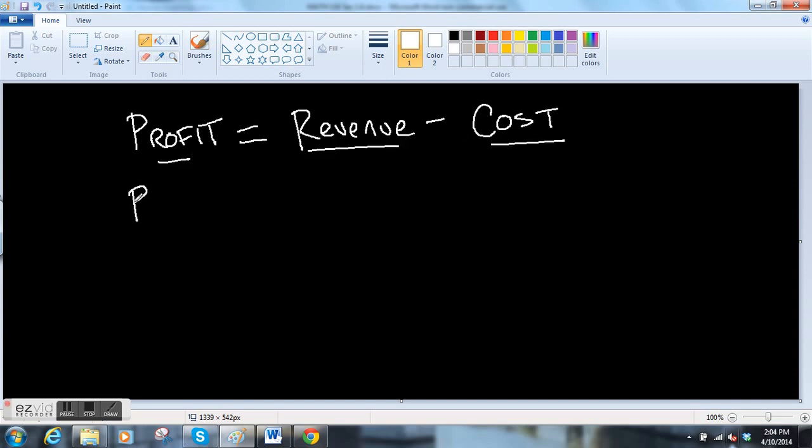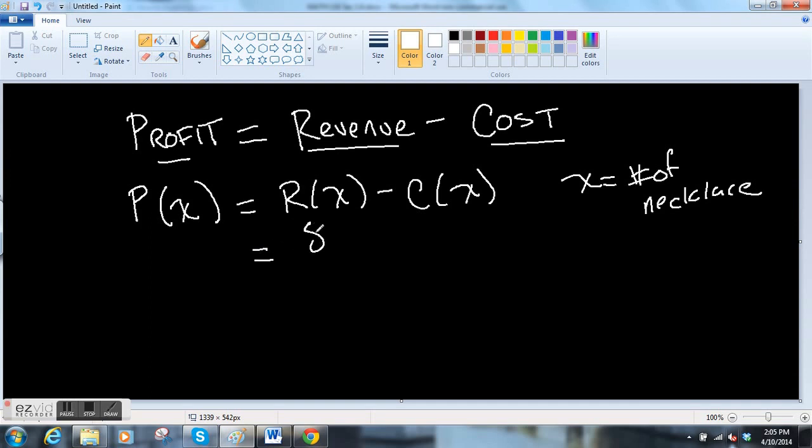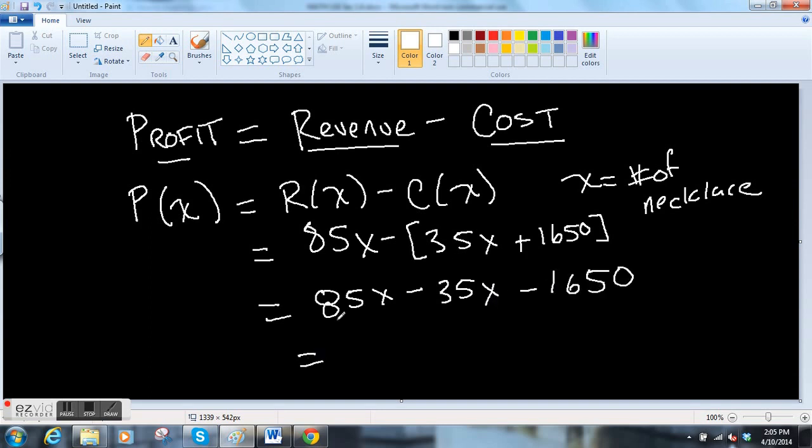If you want your profit function P(x), this is going to be your revenue function minus your cost function. Remember x equals in this case the number of necklaces sold, but it could be dryers or computers or whatever else you're selling. So in this case R(x) = 85x minus the cost function, which is 35x + 1650.